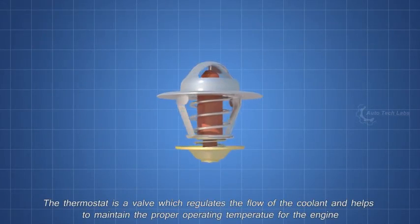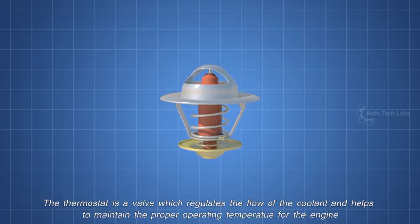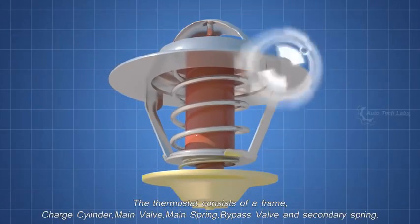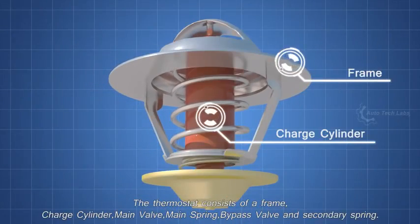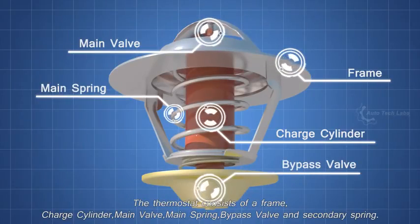Next, the thermostat. The thermostat is a valve which regulates the flow of the coolant and helps to maintain the proper operating temperature for the engine. The thermostat consists of a frame, charge cylinder, main valve, main spring, bypass valve, and secondary spring.